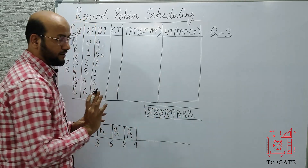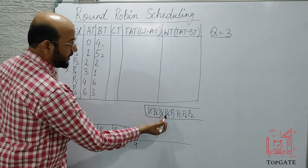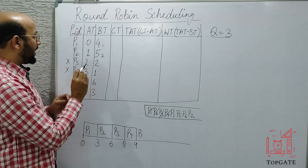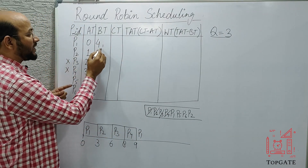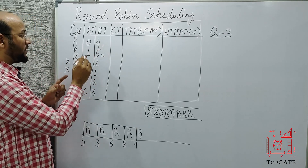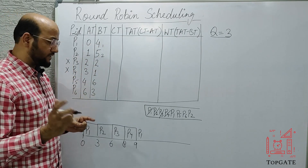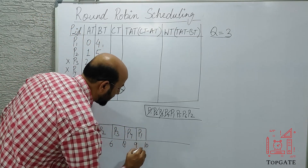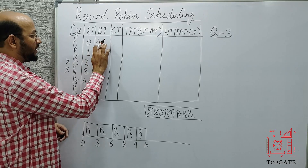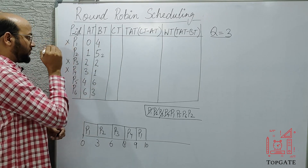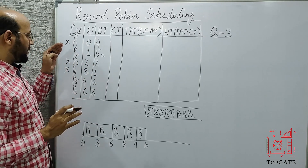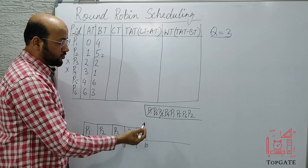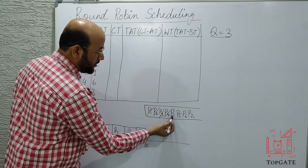P4 has completed so I cut it and don't write it. Now at the head of the ready queue we have P1. P1's remaining time is one unit, since it already executed three units. So P1 starts at nine and completes at ten. P1 terminates and goes out of the system — there is no P1, no P3, no P4 in the system now.